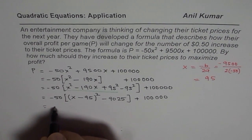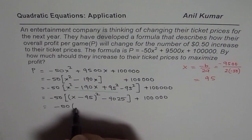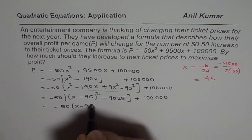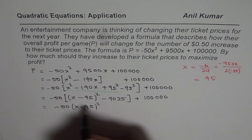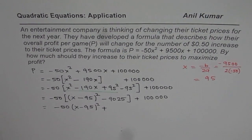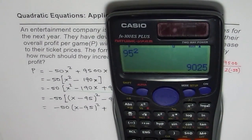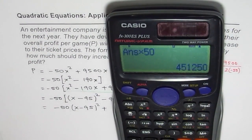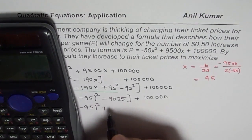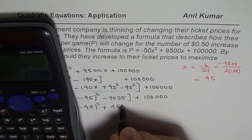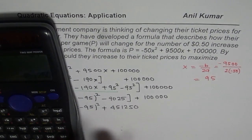Now we will open the brackets. We get minus 50, x minus 95 whole squared. Minus minus becomes plus. So we will multiply 9025 by 50 now. 451250. That is what we get.